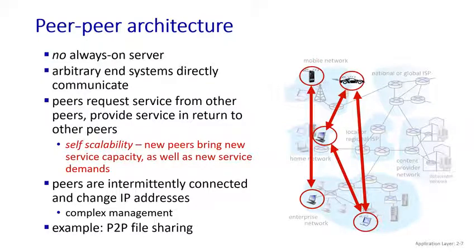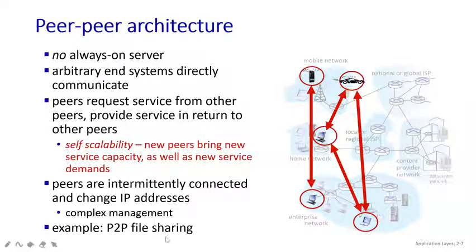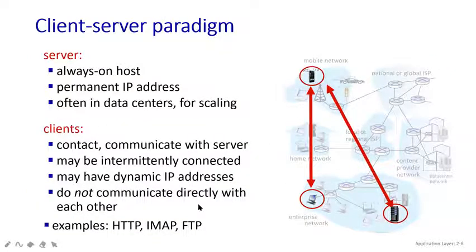Since files and messages move rapidly from one place to another, peer-to-peer results in a very complex management architecture. However, it is highly useful because it sends files very fast. For example, sending a WhatsApp message, photos, videos, or files from one mobile to another is peer-to-peer — no one acts as a server, and the IP address can change as you send to n number of people. This is known as peer-to-peer file sharing.